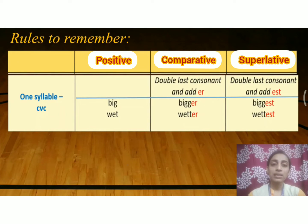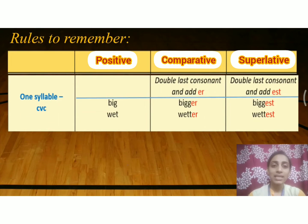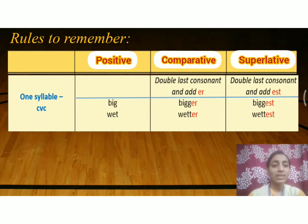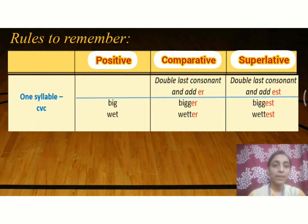Now we shall learn the rules for adjectives which are in the CVC form. CVC means consonant-vowel-consonant. If you look at the spelling of 'big': B is a consonant, I is a vowel, G is a consonant. So the word 'big' is in CVC form.